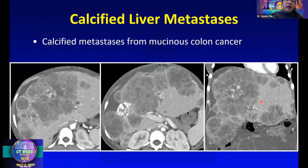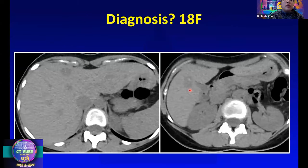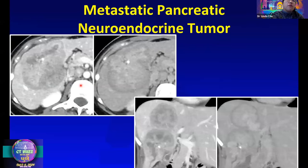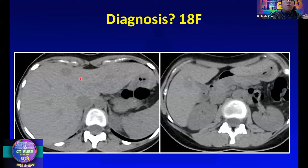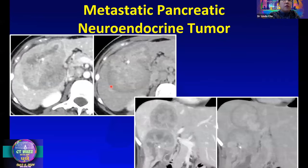Metastases can calcify — this case of mucinous colon cancer demonstrates that calcified metastases typically arise from mucinous primaries, either colon or GYN. Sometimes these cases are very difficult. This is a humbling outside case in a young woman with two hypodense liver lesions with faint calcifications — the enhancement pattern and margins couldn't be clearly defined, and nothing was done. A few years later, the lesions had grown substantially and turned out to be metastatic pancreatic neuroendocrine tumor. At 1.5 cm, you can't confirm benignity, so a liver protocol CT or MRI should have been performed for further characterization.